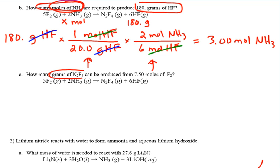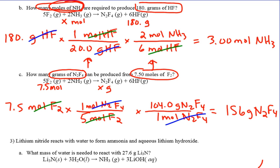Problem 2C: How many grams of N2F4 can be produced from 7.5 moles of F2? You are given 7.5 moles of F2 and trying to find grams of N2F4. Starting with moles, you skip the first conversion fraction and pick up with the mole ratio from the balanced equation — the mole-to-mole conversion — then convert moles of the new substance to grams using a molar mass conversion. The answer is 156 grams of N2F4.